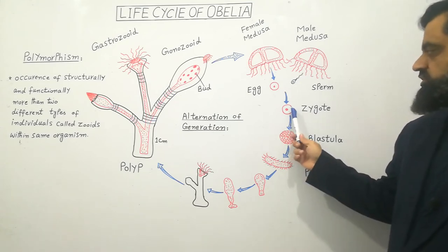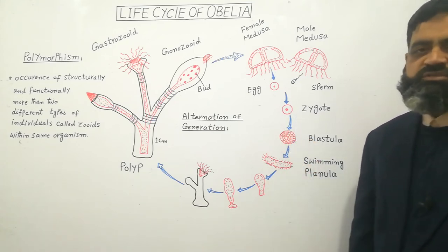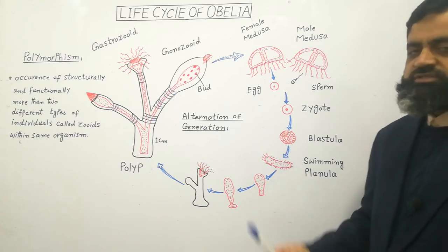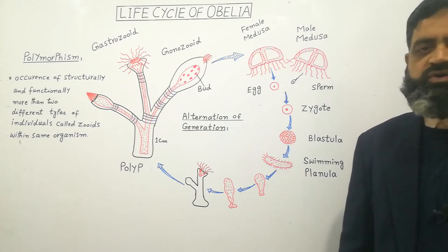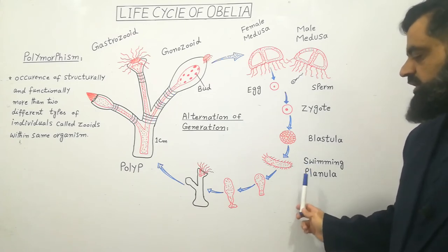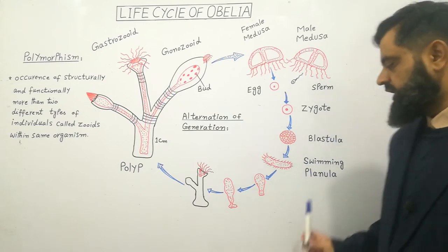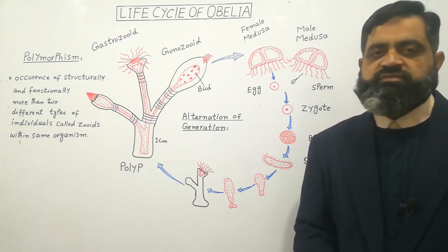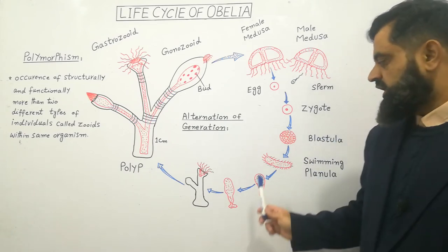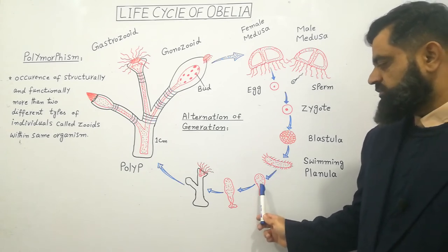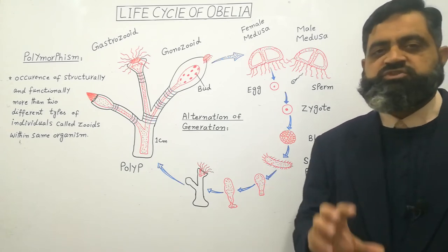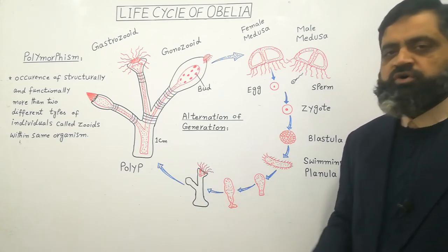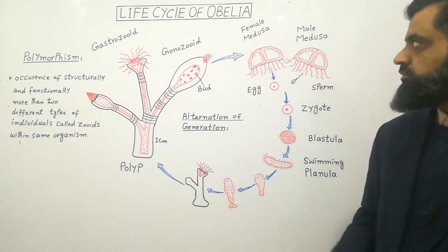Soon this zygote changes into a structure known as Blastula. The Blastula later develops cilia on its surface and becomes a larva known as Planula larva. This is a free-swimming larva known as Planula. The Planula larva swims in the water, feeds on microorganisms, and after growing, at some point it attaches to a substratum.